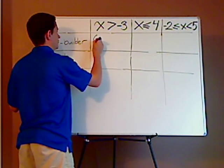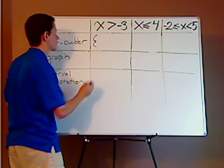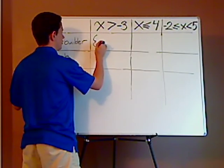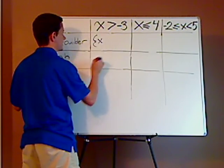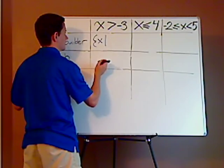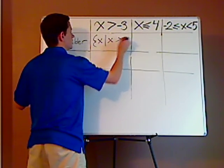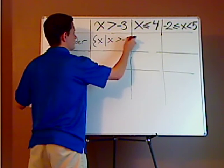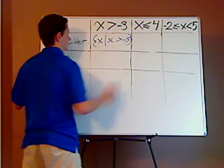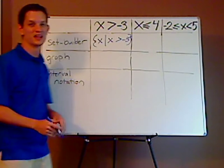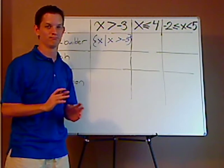Use a set, that means you're going to use braces. So it's going to be open braces, x such that or belongs to the inequality, x is greater than negative three. That's pretty much it for set builder notation. It's just that obvious.